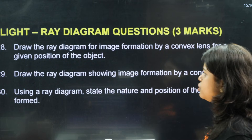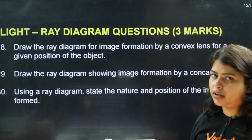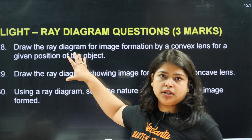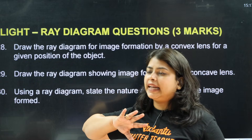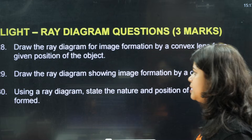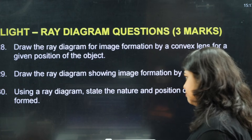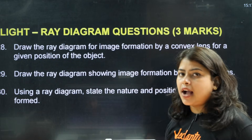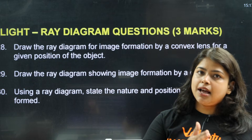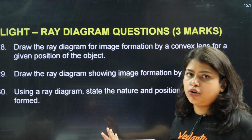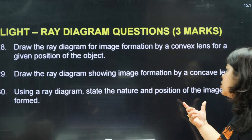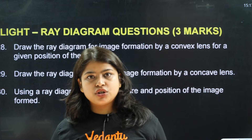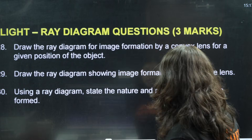Next: Draw the ray diagram for image formation by a convex lens for a given position of the object. Sometimes they will provide a diagram; sometimes you must draw it. For concave lens ray diagrams — these are comparatively easier. Using the ray diagram, state the nature and position of the image formed — such type of questions will also be asked.